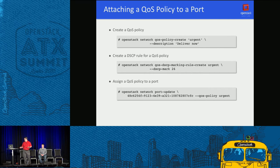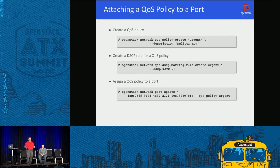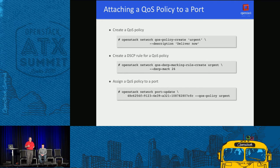Attaching a QoS policy to a port is exactly as it was in Liberty with bandwidth limiting. You create a QoS policy with a description, and instead of adding a bandwidth limiting rule as in Liberty, you add a QoS DSCP marking rule create with the given DSCP mark. Once added, you assign the QoS policy to a port. Except for that middle DSCP rule line, this is identical to what you have in Liberty and Mitaka.